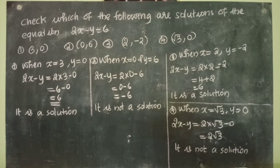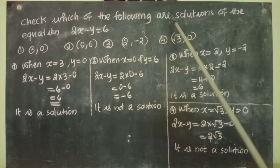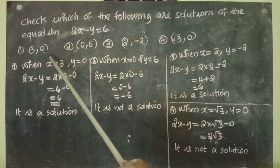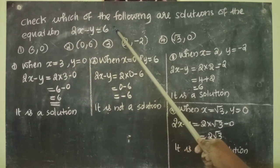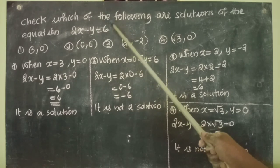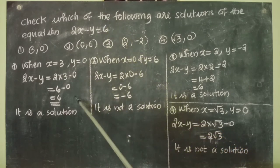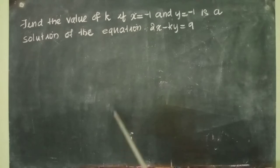If the question is to check whether a point is a solution or not, you have to give the values of x and y in the equation and check if the equation is true or not. If we get the value of the right side as the answer, we can conclude it is a solution; otherwise it is not a solution.